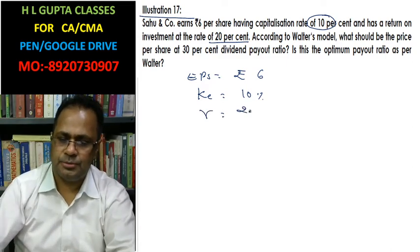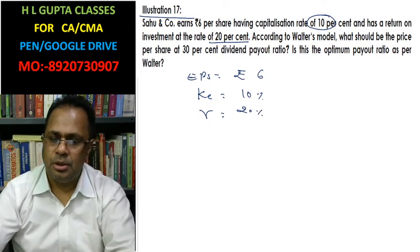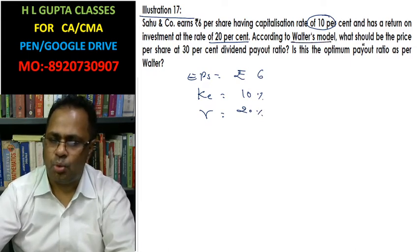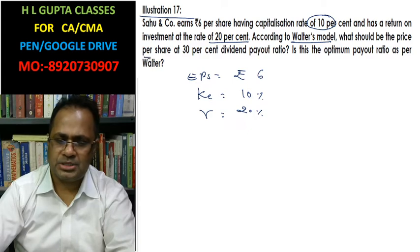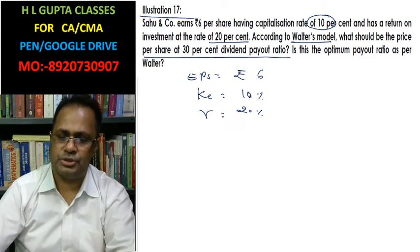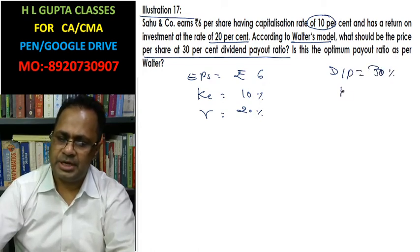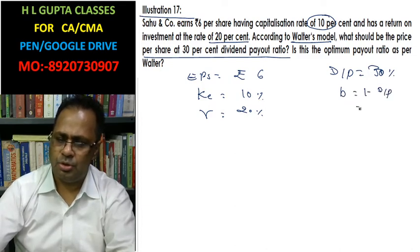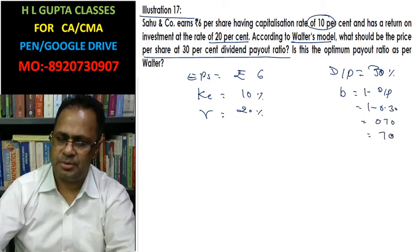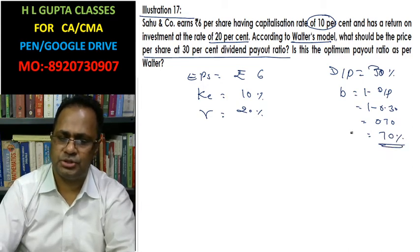R is 20%. According to Walter's model, what should be the price of the share per share at a 30% dividend payout ratio? Dividend payout ratio is 30%, which means retention ratio is 1 minus 0.30, that is equal to 0.70 — a 70% retention ratio.